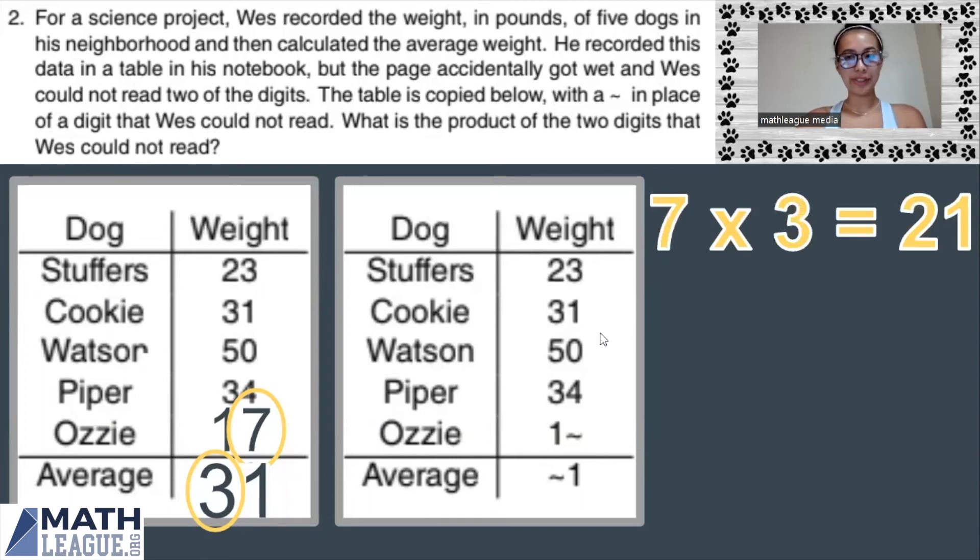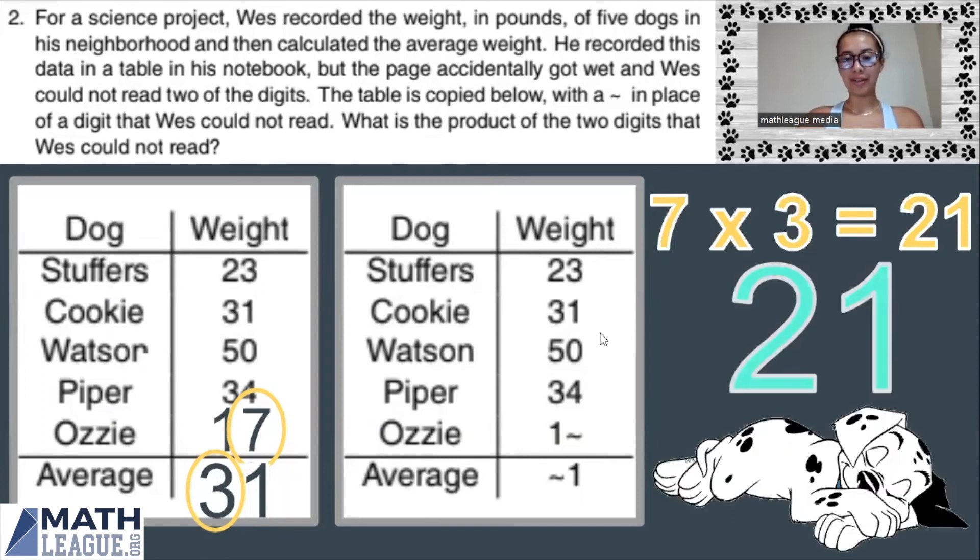Seven times three is 21. So our answer is 21. That is the product of the two digits that Wes could not read.